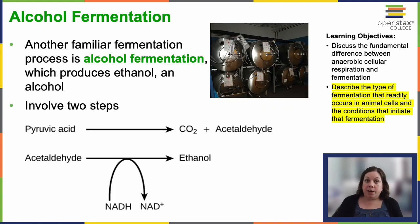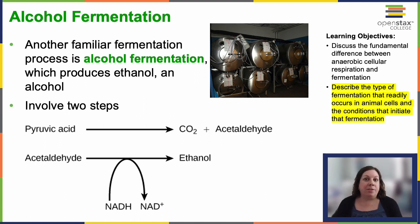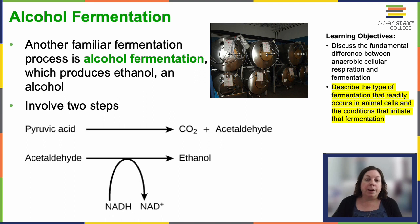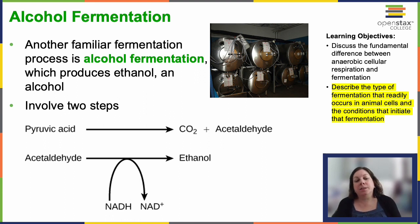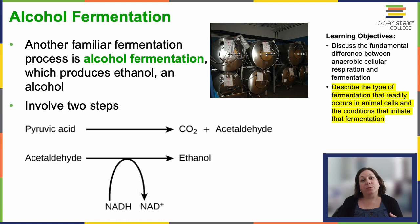Another well-known type of fermentation is alcohol fermentation, which yields ethanol. In the initial reaction, pyruvic acid loses a carbonyl group, liberating a carbon dioxide molecule as gas. This loss of carbon dioxide reduces the molecule by one carbon atom, resulting in acetaldehyde. In the subsequent reaction, NADH loses an electron to form NAD+, while acetaldehyde accepts the electron, producing ethanol.